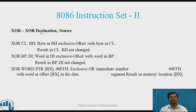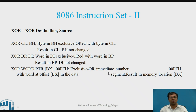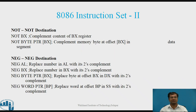XOR. Syntax: XOR Destination, Source. Example: XOR CL, BH — byte in BH is exclusive-OR-ed with byte in CL; result in CL; BH not changed. XOR BP, DI — word in DI exclusive-OR-ed with word in BP; result in BP; DI not changed. XOR WORD PTR [BX], 00FFH — exclusive-OR of immediate number 00FFH with word at offset BX in data segment; result in memory location BX.